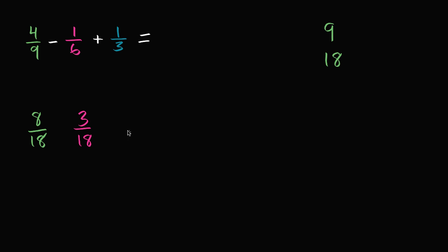And then last but not least, what is 1/3 as something over 18? Well, 3 times 6 is 18. So 1 times 6 is going to be 6. Or you could do it another way. You could say, well, what's 1/3 of 18? It's going to be 6. What's 1/6 of 18? It's going to be 3. 4/9 of 18? That's a little bit harder to think in your brain. But that's going to be 8/18. Either way, I've just rewritten these fractions.